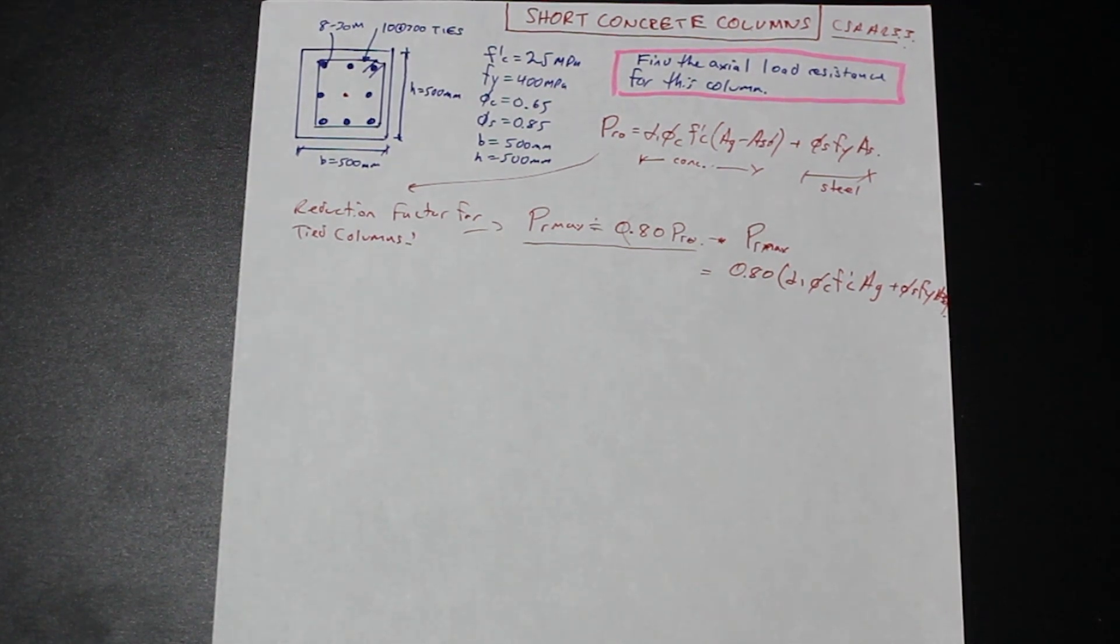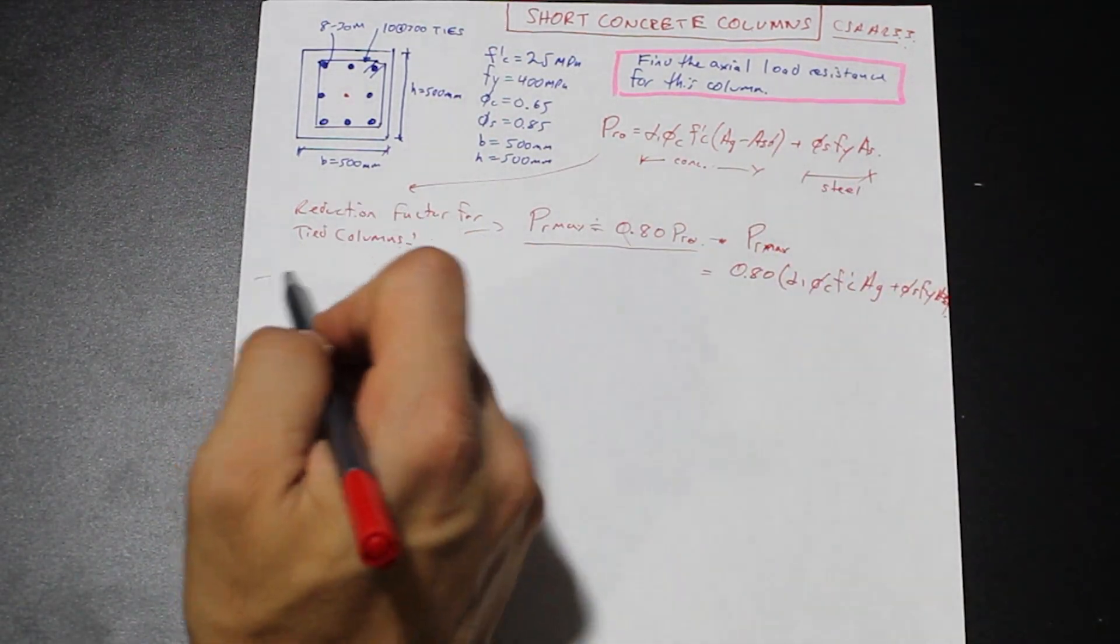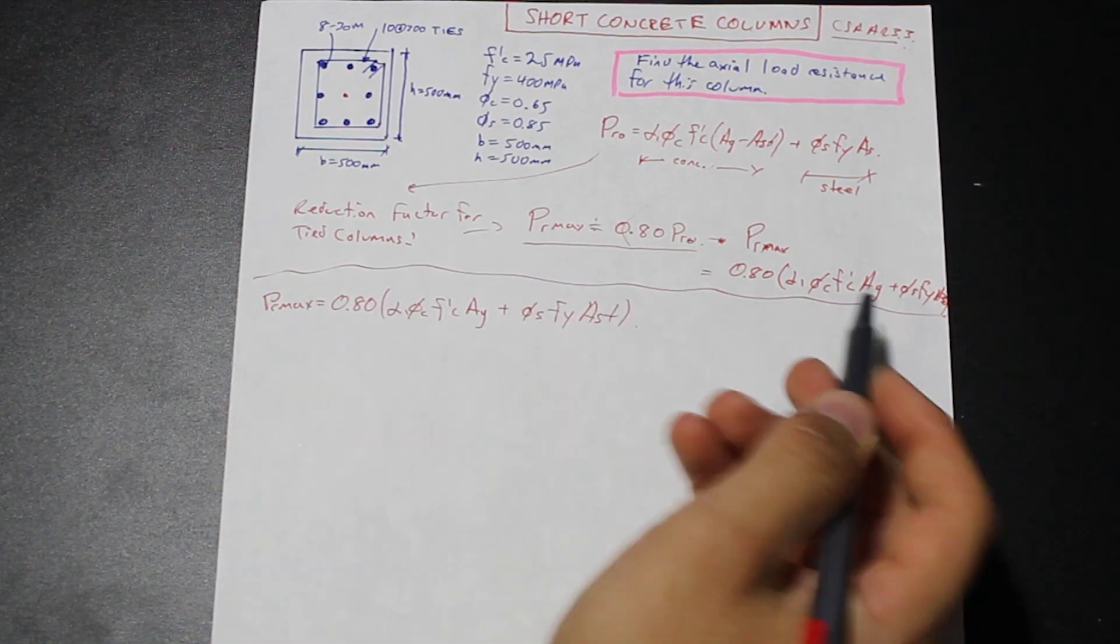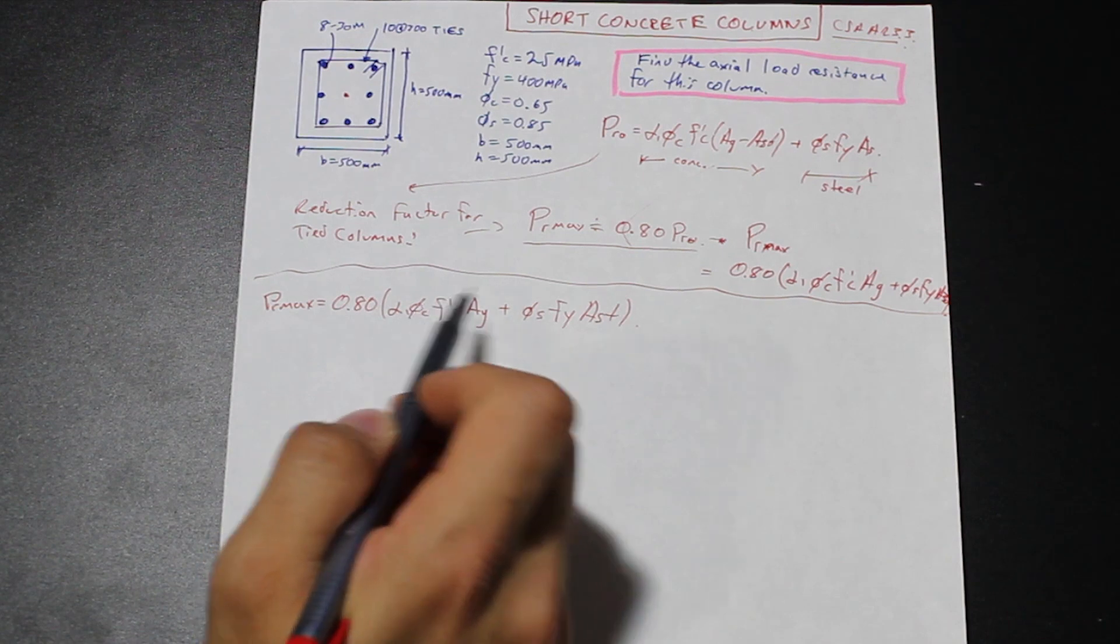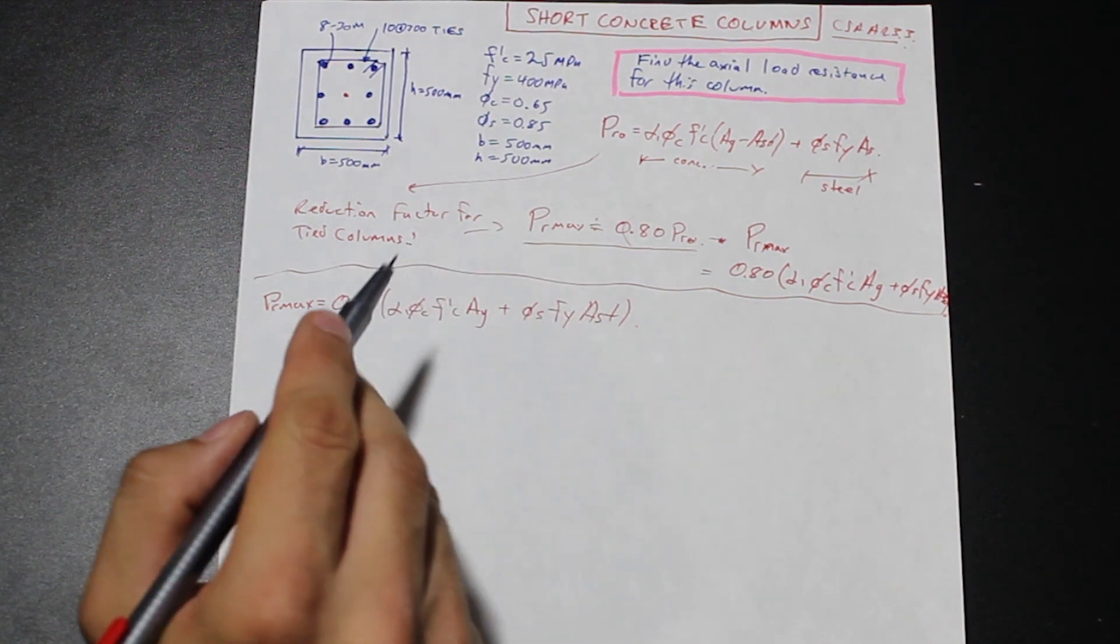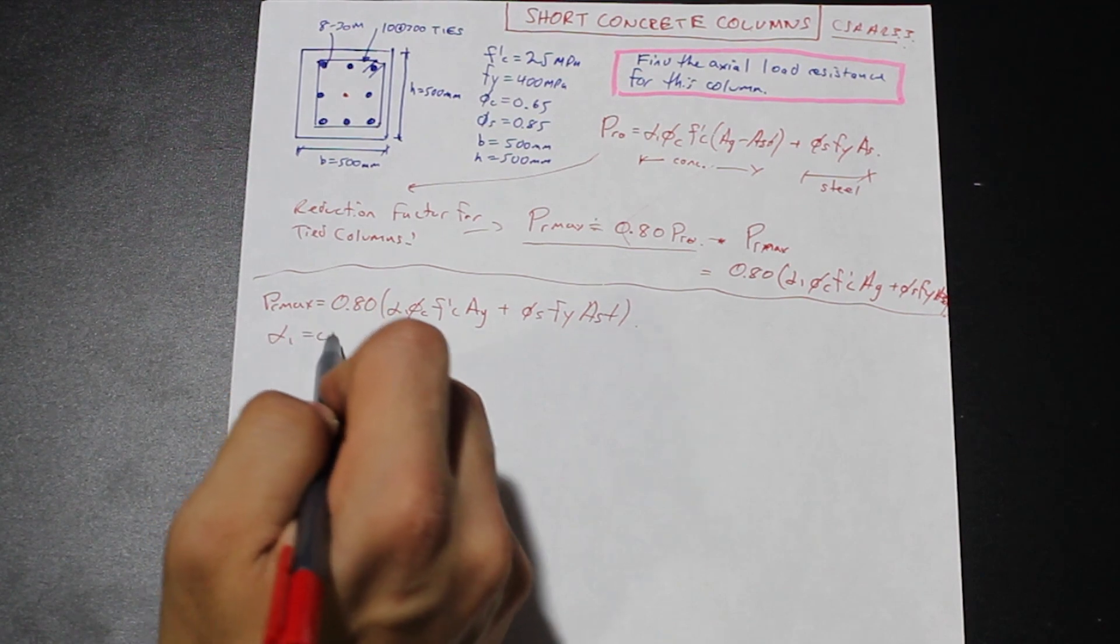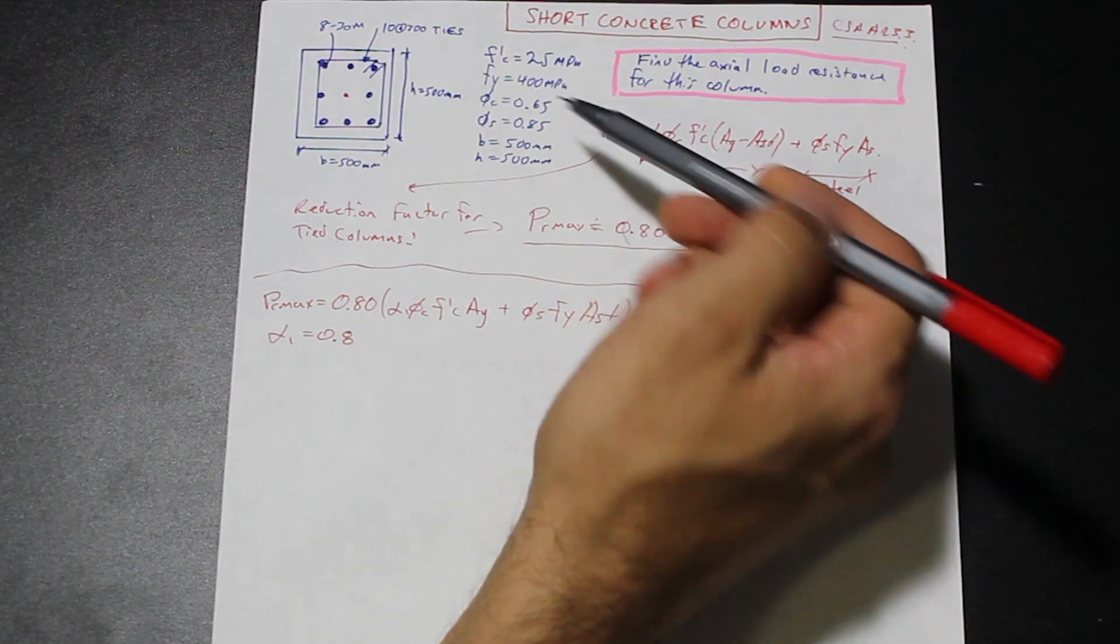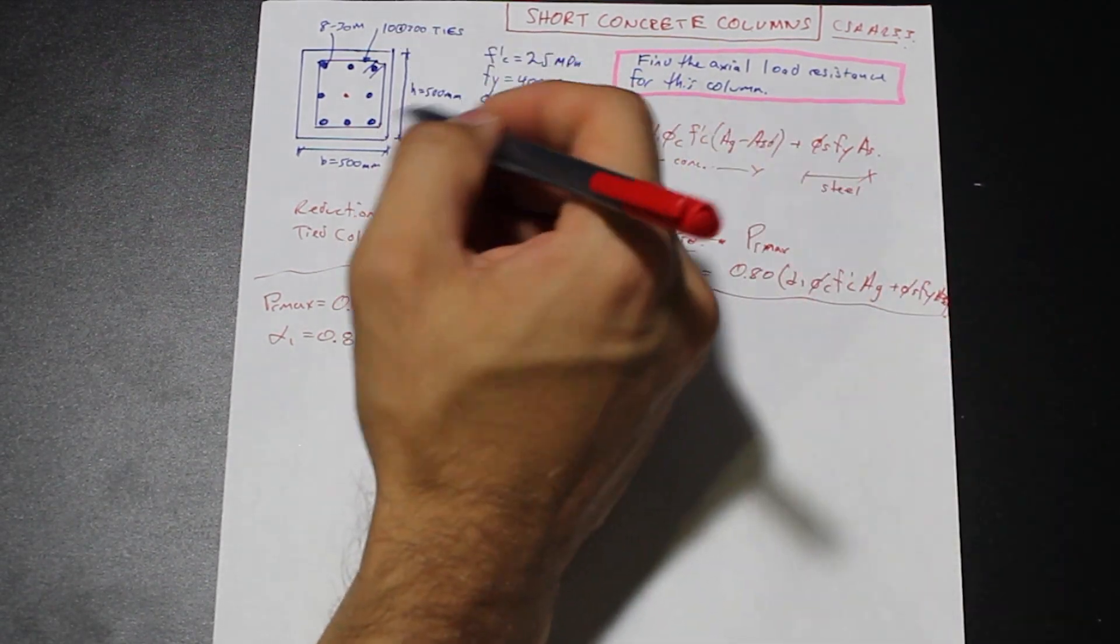Now we can go ahead and we can try and solve this problem now that we have those formulas. So first, let's just calculate all of these unknowns. Now alpha1 here, I'm just going to rewrite this PRmax formula so it's more clear. So we have alpha1. Alpha1 is a formula, but we can assume for regular strength concretes, alpha1 is going to be about 0.8.